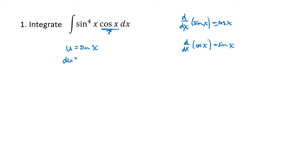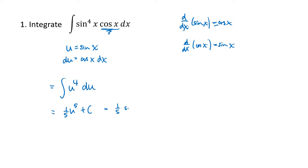du equals cosine x dx, so this is a simple substitution and gives us the integral of u to the fourth du. That's just one-fifth u to the fifth plus c, which is one-fifth sine to the fifth of x plus c. It doesn't really get much easier than that one.